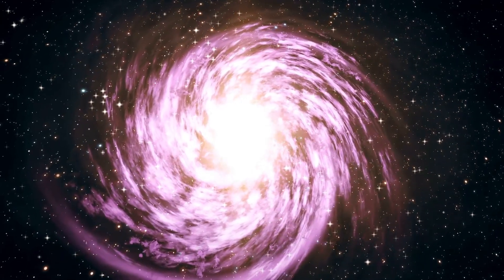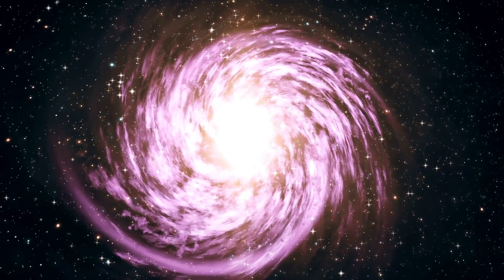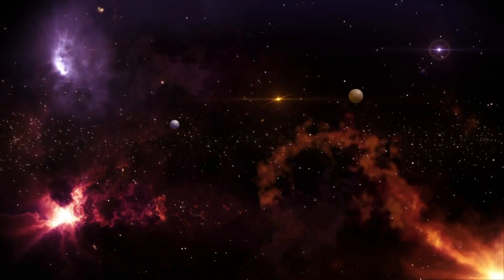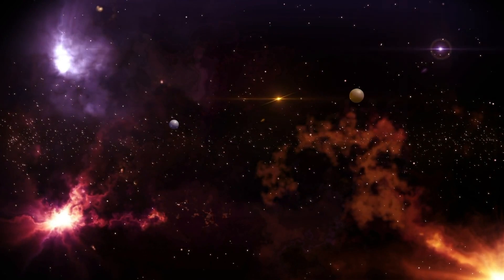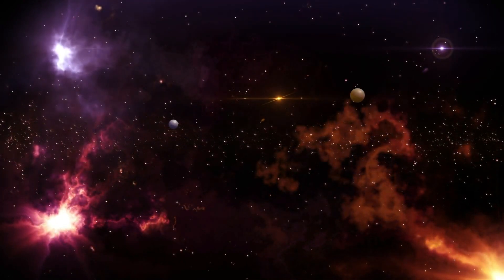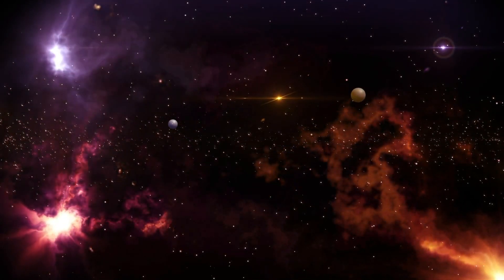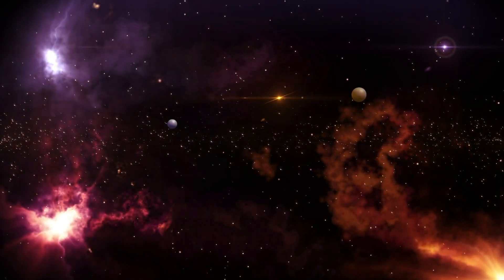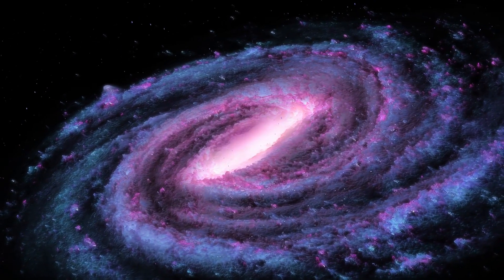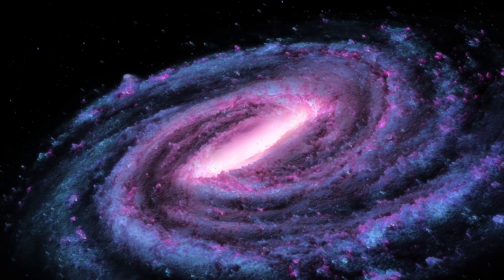And we must not overlook the terrestrial exoplanets, which are the ones that resemble our own planet, Earth. These planets come in various sizes, ranging from smaller than our world to double its size. There are even super-Earths, which have masses greater than twice that of our planet, but are lighter than Neptune.